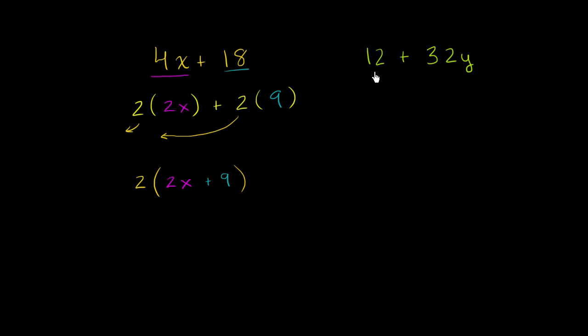So for example, 12 we can rewrite as 4 times 3. And 32, we can rewrite. So this is going to be plus 4 times,